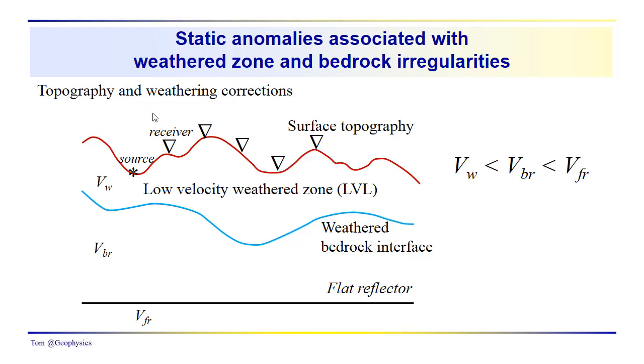The problem that we're going to look at next is one that falls into the category of distortions that occur in your common midpoint gathers and shot records, and these are referred to as static anomalies.